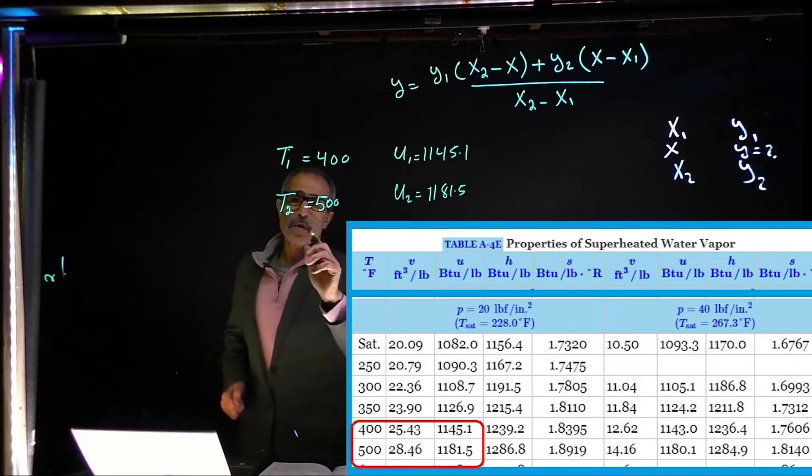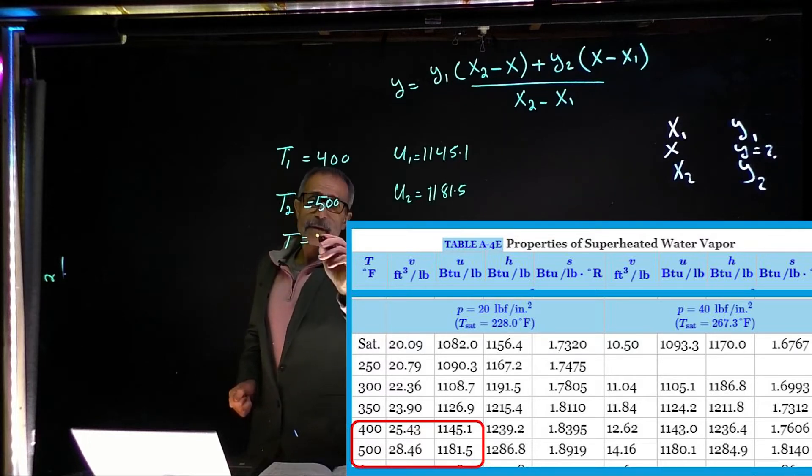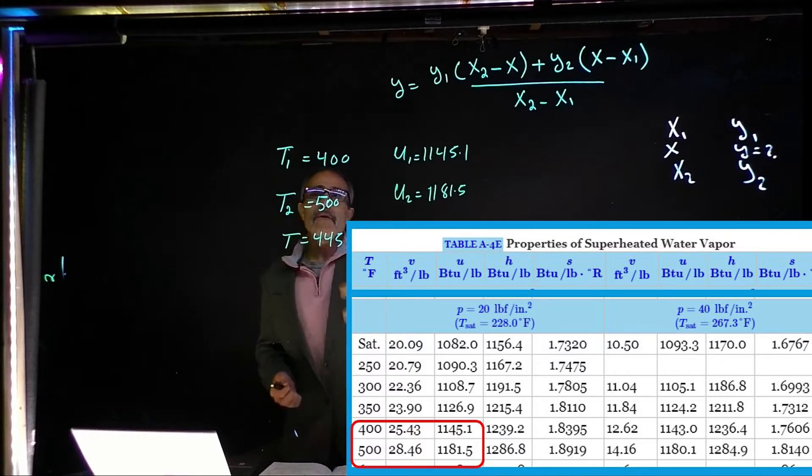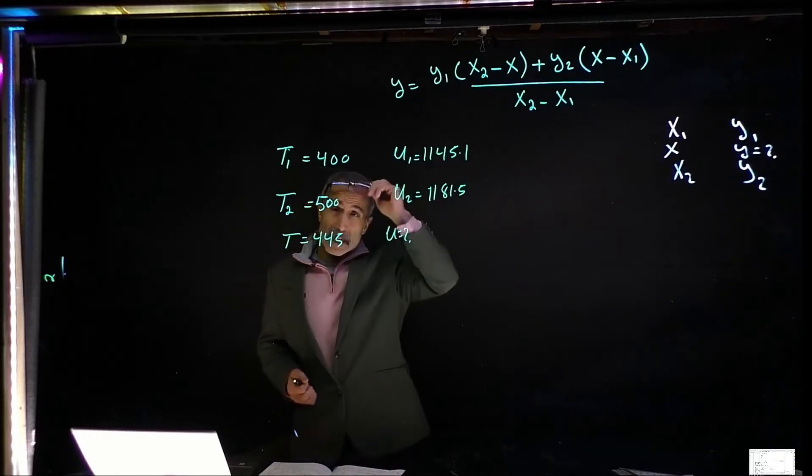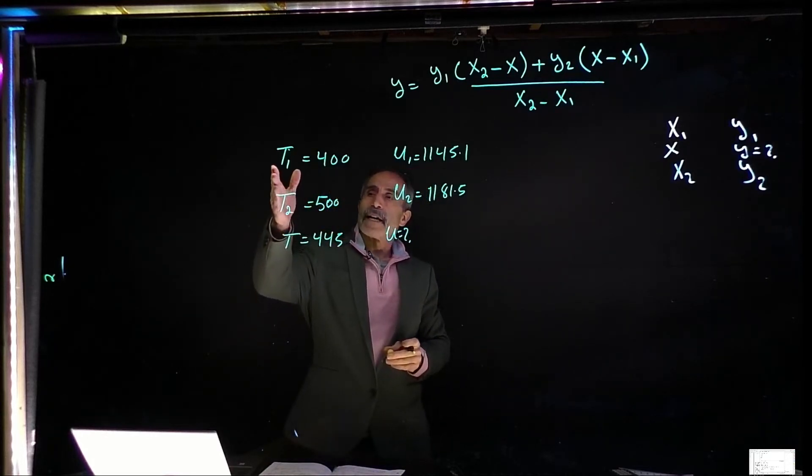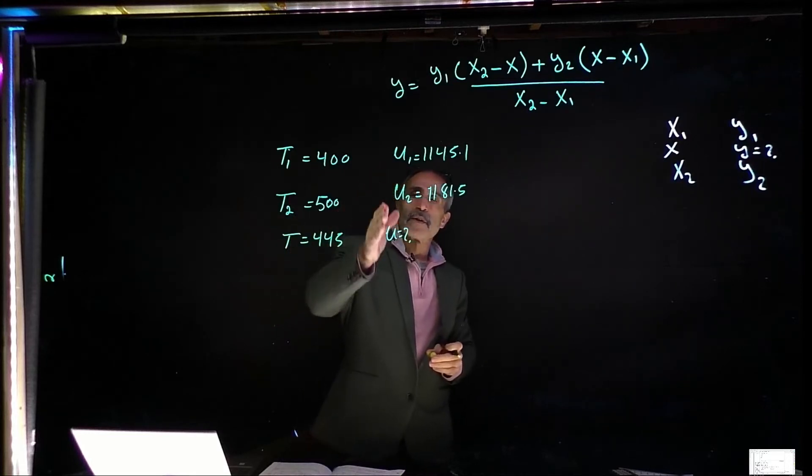But I'm looking for, my T I'm looking for is 445. I really want to know what u comes out to. So you can go ahead and say, okay, these are x, these are y. Remember, your x should be the one that has three numbers and y should be the one that you're looking for.